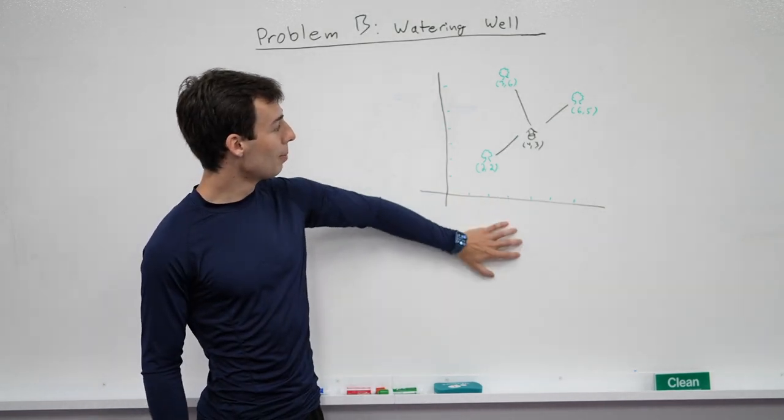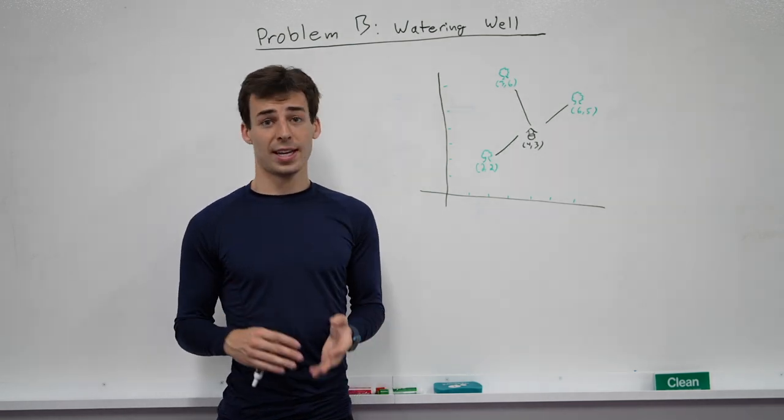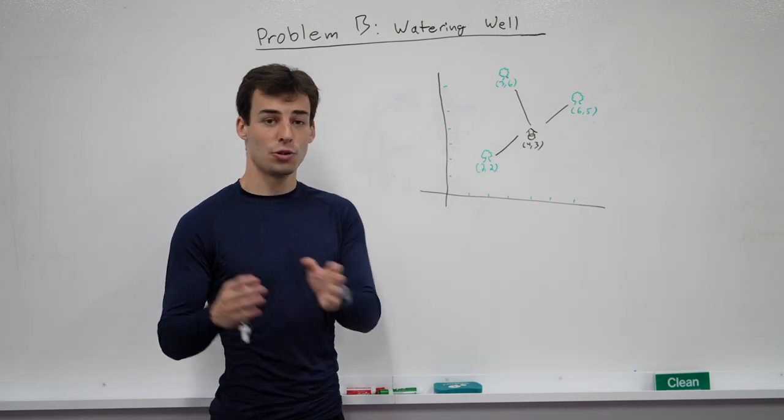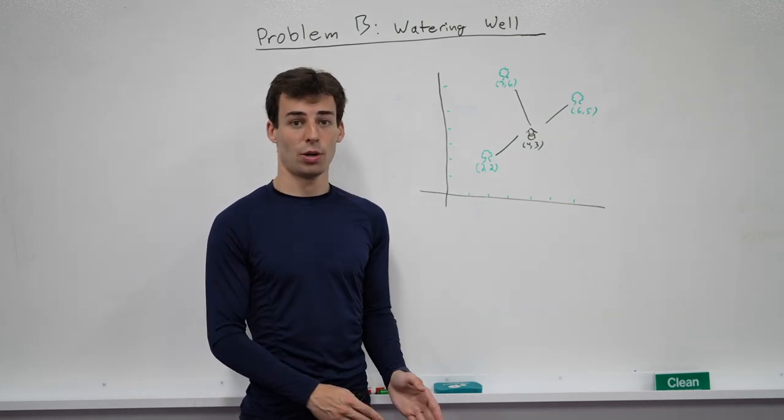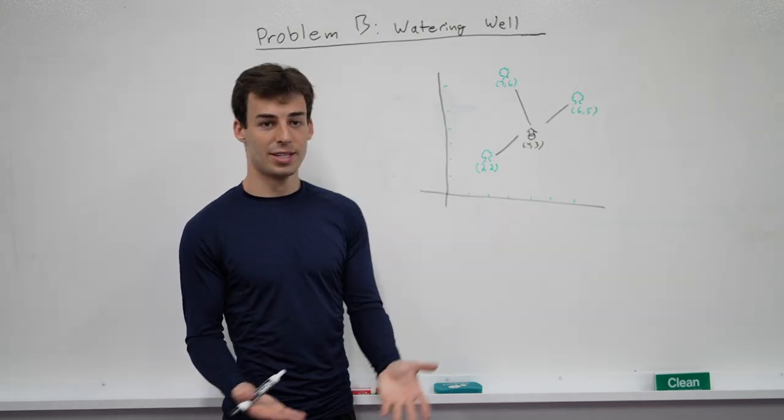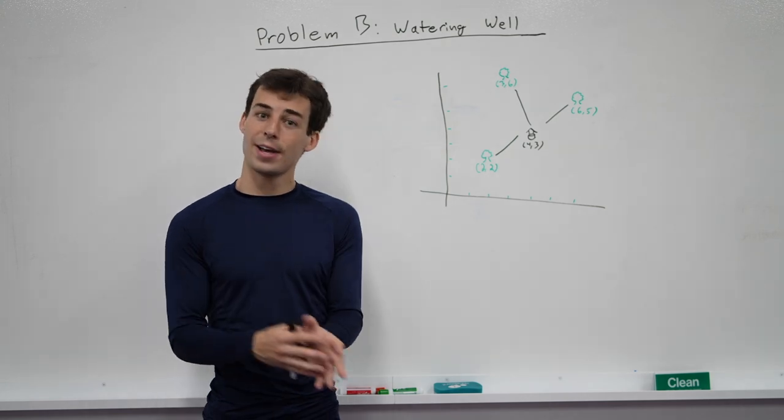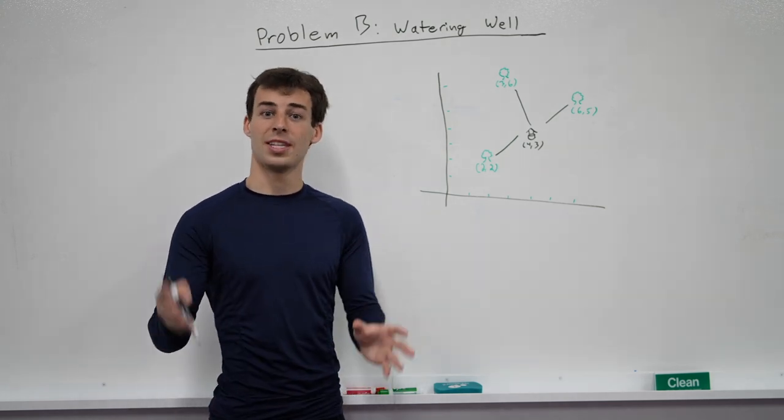So let's talk about B1 first. The idea for B1 is the bounds on both the x and the y coordinates are 3,000. So they're at most 3,000 x coordinates and 3,000 y coordinates. We also have a whole bunch of different trees and different wells, so we need to handle them in a faster way than the number of trees times the number of wells.